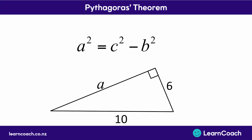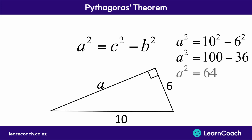Now that we have a formula for a squared, let's plug in the numbers that we know. We know c is 10, so we put 10 squared into the equation. We know that b is 6, so instead of b we write 6 squared. Then we can solve it: 10 squared minus 6 squared gives us 64. We don't want to know a squared — we want to know what a is, so remember to square root your answer. This length here must be 8.